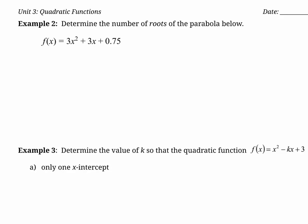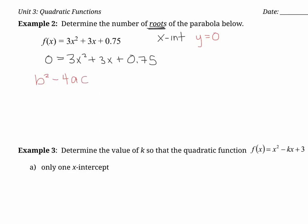This question says: determine the number of roots of the parabola below. Roots just mean x-intercepts. To find an x-intercept, I need to substitute y equals zero — or in this case, f(x) equals zero. Plugging that in: 0 equals 3x squared plus 3x plus 0.75. Now, the question says determine the number of roots, not the actual roots themselves. So all I'm going to do is check the discriminant — anytime it just asks for the number of solutions, I check the discriminant.